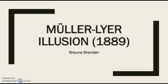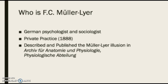The topic I chose to present on was F.C. Müller-Lyer and how he discovered the Müller-Lyer illusion in 1889. Background information is that Müller-Lyer was a German psychologist and sociologist who studied at the universities of Berlin, Vienna, Paris, and London. Müller-Lyer opened his own private practice in 1888 in Munich, and in 1889 he described and published a perceptual illusion, now known as the Müller-Lyer illusion, in a physiology journal.